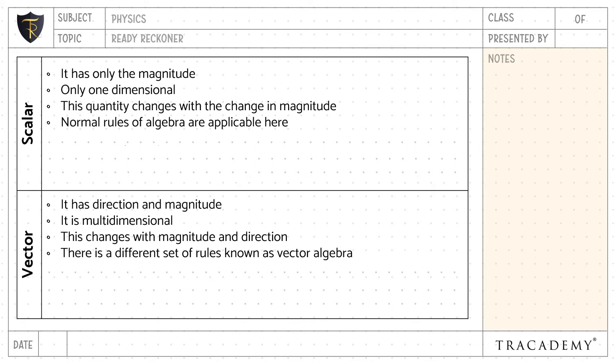known as vector algebra for vector quantity. One scalar quantity can divide another scalar quantity. One vector quantity cannot divide another vector quantity.